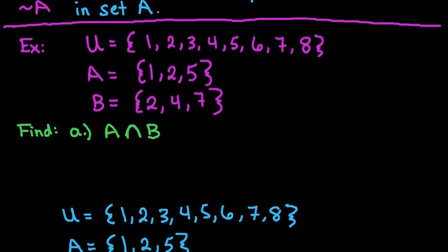Okay, so what I have here is a universal set that contains the numbers 1, 2, 3, 4, 5, 6, 7, and 8. So basically just 1 through 8. A is the set {1, 2, 5}. B is the set {2, 4, 7}.